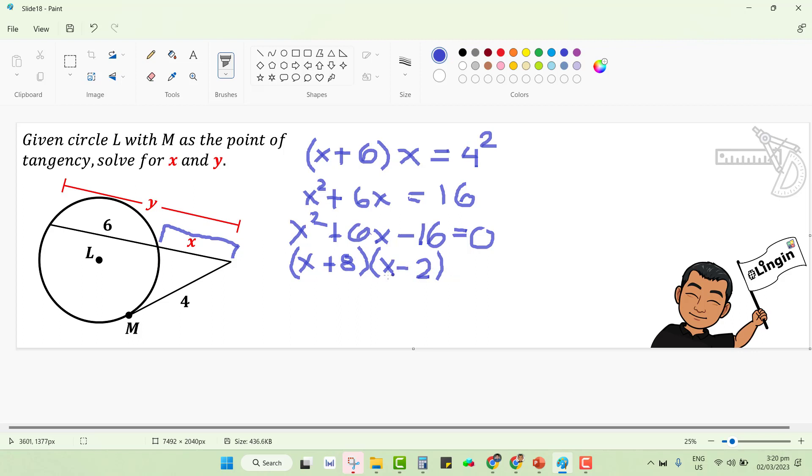Let us check using the FOIL method. x times x is x squared. x times negative 2 is negative 2x. 8 times x is 8x, then plus negative 2x. Yes, that's correct, 6x. And 8 times negative 2 is negative 16.